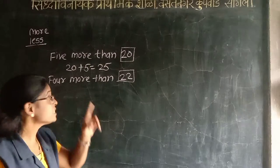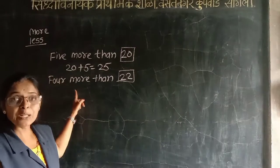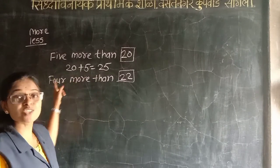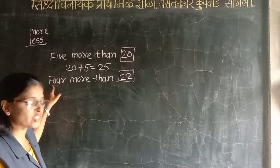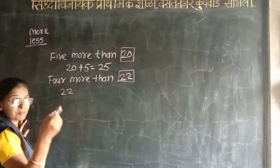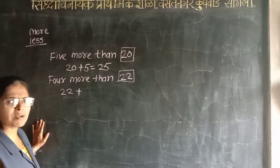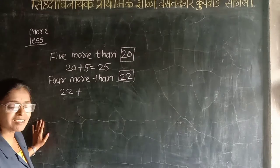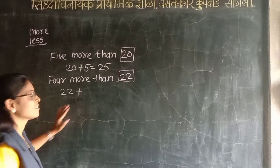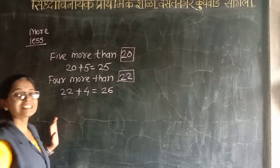Five more than four? So 4. 22. 4, 4, 5. 6, 6, 6.